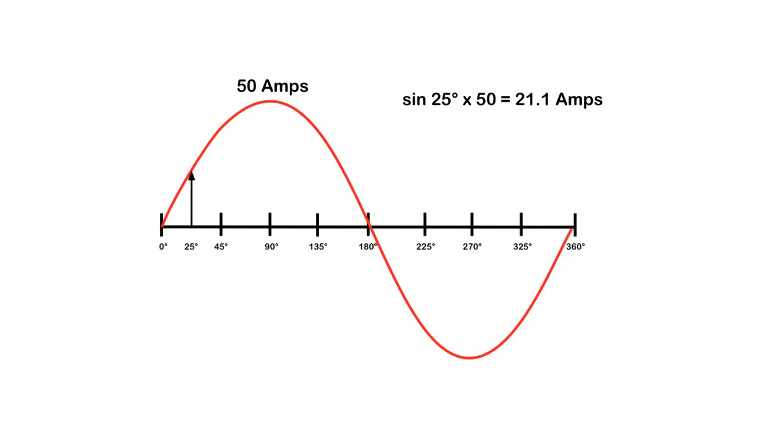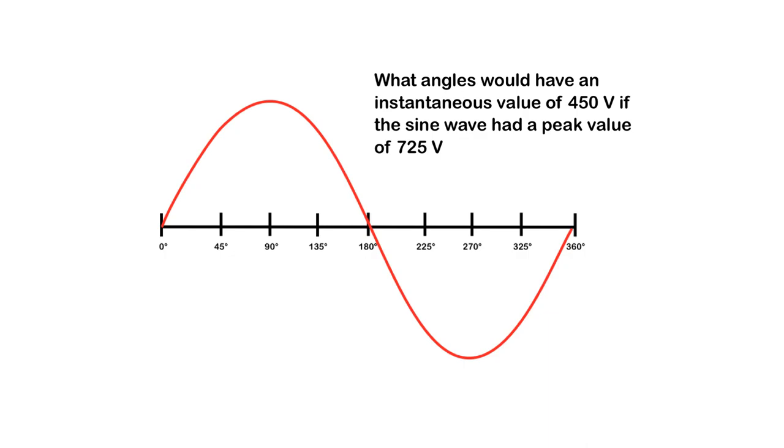Now also we could use this formula of sine theta times peak equals instantaneous to figure out at what angles certain voltages will occur. So what angles, and watch for that angles, we'll talk about that in a second, would you have an instantaneous value of 450 volts if the sine wave had a peak value of 725?